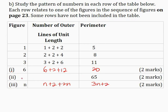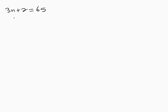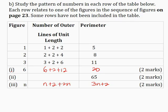Now in order to calculate the figure number, I will use the perimeter of 65 units with the formula 3n plus 2. So I write 3n plus 2 is equal to 65 and solve this linear equation for n. This gives 3n is equal to 65 minus 2, so 3n equals 63. Dividing by 3, n is equal to 21. Using the generalized number pattern when n is 21: the first term is 21, plus 2, plus 2 multiplied by 21 which is 42. Notice that 21 plus 2 is 23, and 23 plus 42 is 65, which confirms our answer.